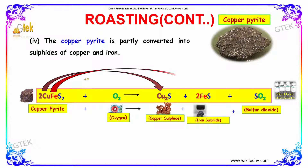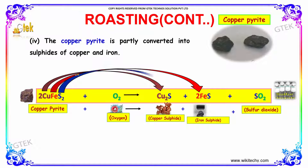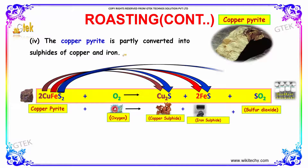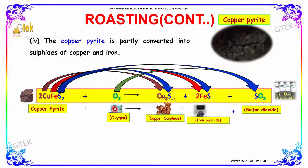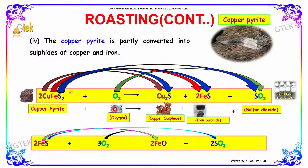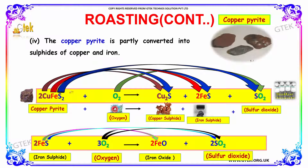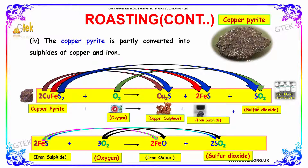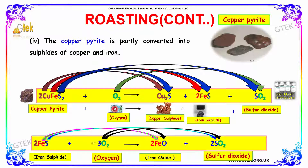In the roasting process, the copper pyrite is partly converted into sulfides of copper and iron. Copper pyrite plus oxygen gives copper sulfide and iron sulfide along with sulfur dioxide. Then iron sulfide reacts with oxygen to give iron oxide and sulfur dioxide.